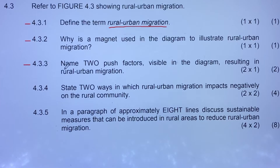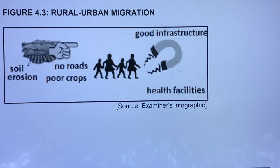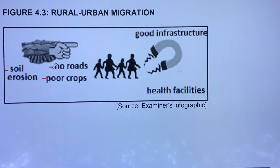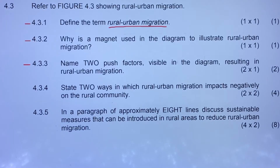The two push factors visible in the diagram are: number one, soil erosion — which means crops cannot be planted, so farmers suffer; and number two, no roads, indicating poor infrastructure that makes it hard to travel. Poor crops result in poverty because people cannot plant on the land. Those three push factors are soil erosion, no roads, and poor crops.